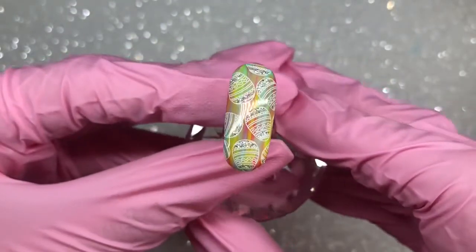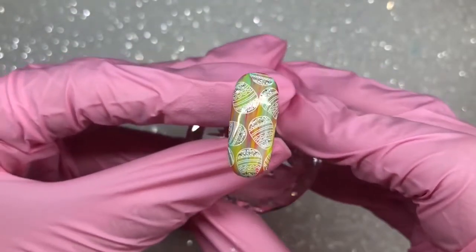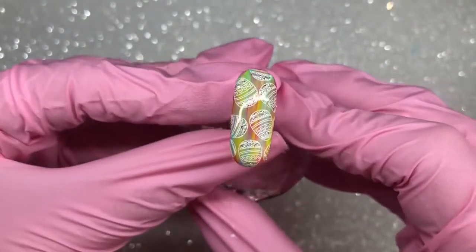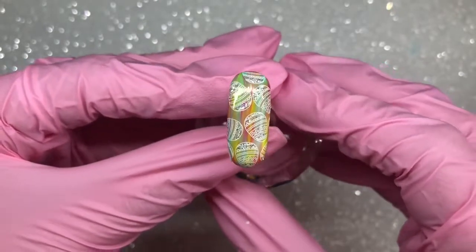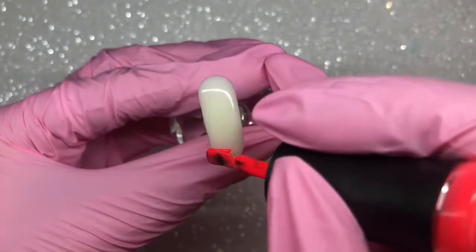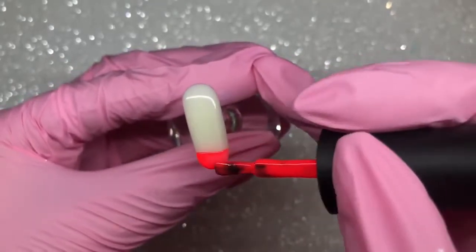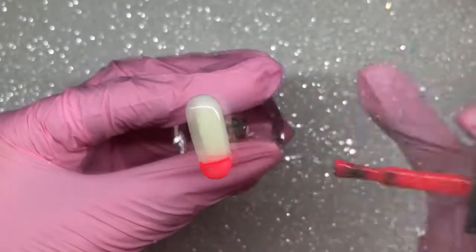Once I've finished adding the glitter, I cured that in my lamp for 30 seconds, applied top coat, and did the finish cure. That design's all done, super Eastery. Next design up is the ombre sunset rainbow kind of design.